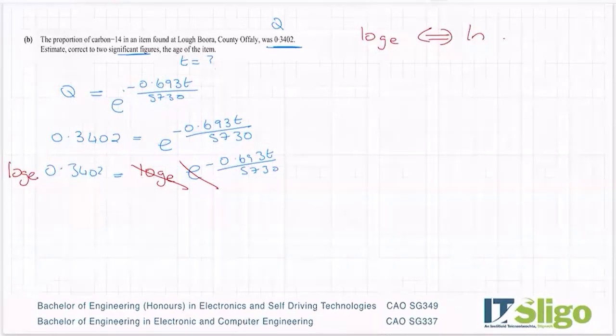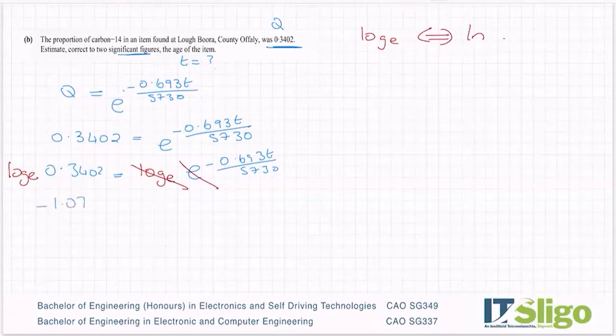So let's put log to the base e or ln. Always remember log to the base e is the exact same thing as ln. Log to the base e is used so often, especially in science, that they have given it its own name and its own button on the calculator. So ln of 0.3402, I am getting minus 1.07822 for that.